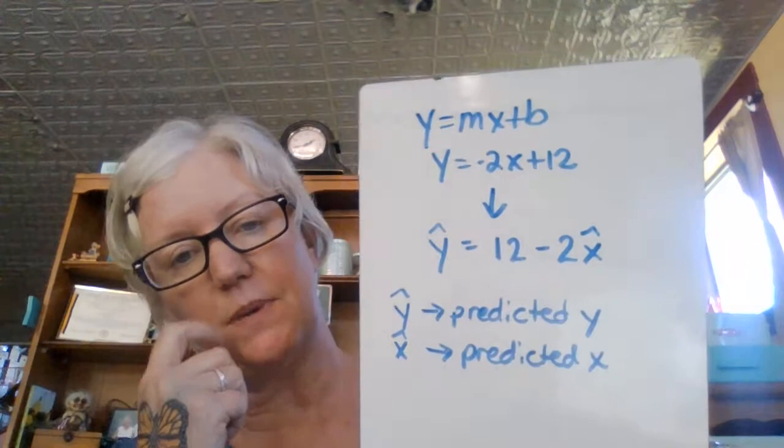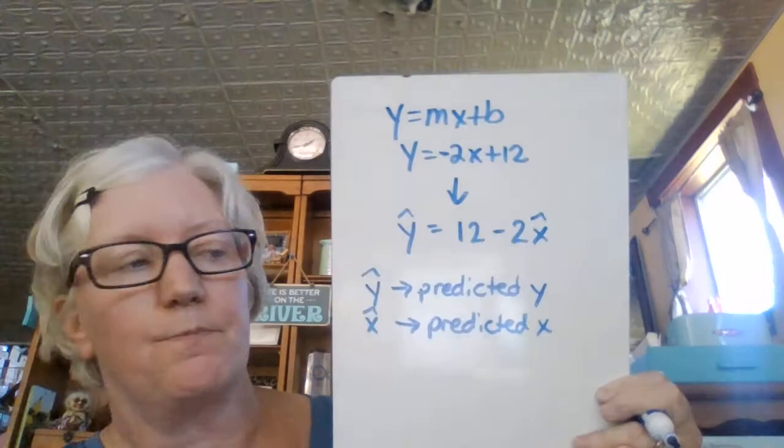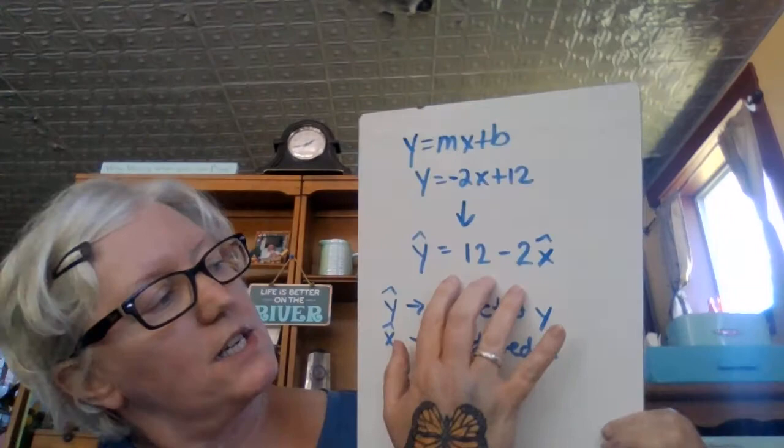We just got done talking about the y equals mx plus b equation, which in my last example is y equals negative 2x plus 12 — a negative correlation. I never calculated the correlation coefficient; you'd have to put that into the website I gave you. But that's the general linear equation, or what we're calling the least squares regression line.